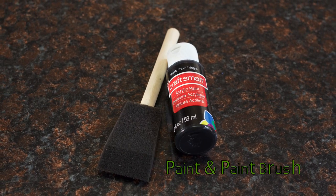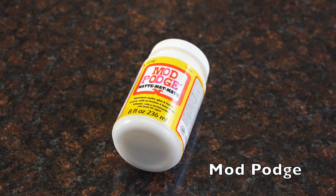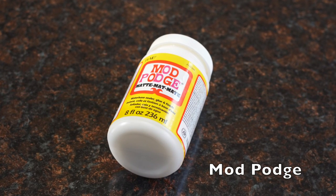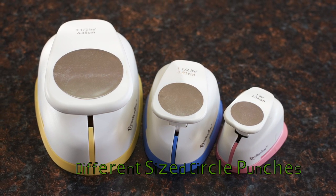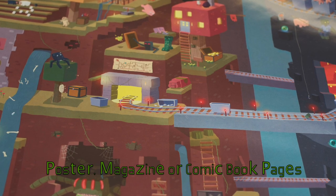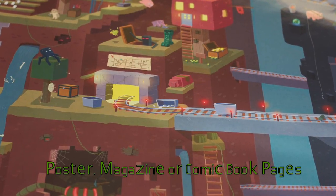For this DIY you'll need a canvas, black paint, and a paintbrush (but you can use any color you want), Mod Podge (if you don't have it I'll provide a link to my video on how to make your own), different size circle punches or you can use different size circles and cut them out, and a poster, magazine, or comic book pages.